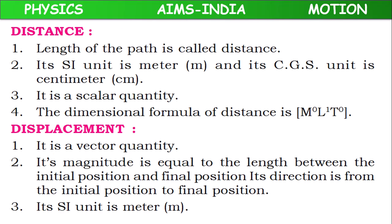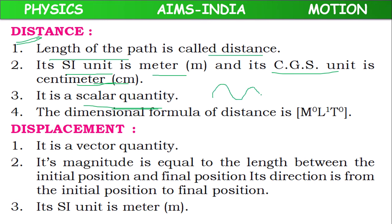In continuation to that, let us revise once more the concepts of distance and displacement. Distance means the length of the path. Its SI unit is meter, CGS unit is centimeter, and it is a scalar quantity. Because when we travel from position A to position B, the direction is not definite — it changes at different points. So it has only magnitude, like 5 kilometers.